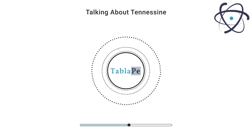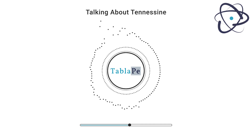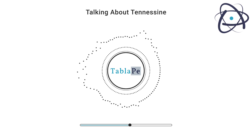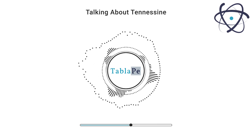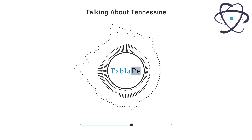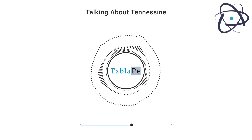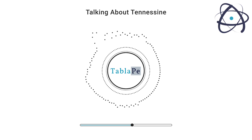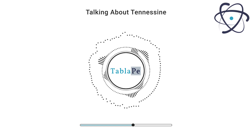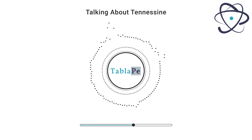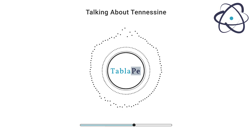At present, Tennessine does not have any direct practical applications due to its extreme instability and limited production. However, the research surrounding super-heavy elements like Tennessine has broader implications for nuclear science and technology.